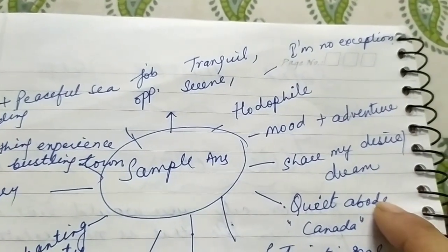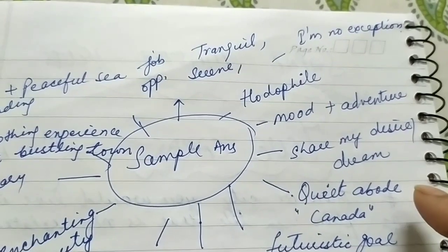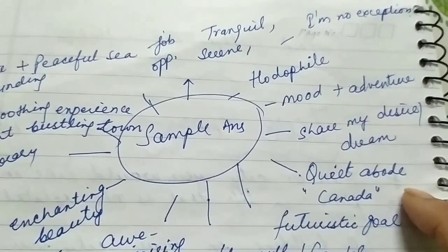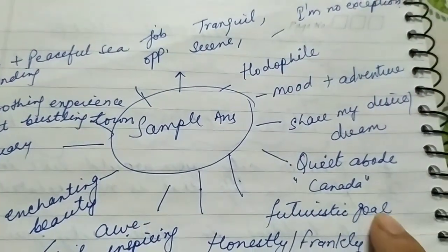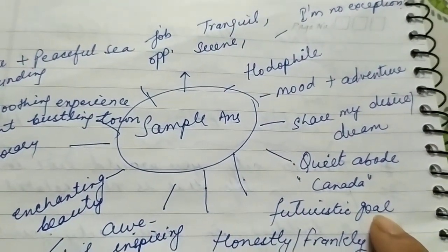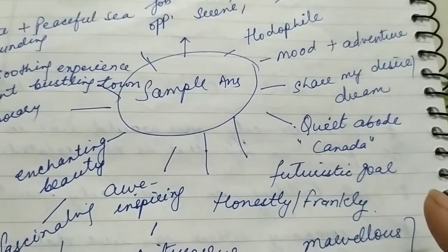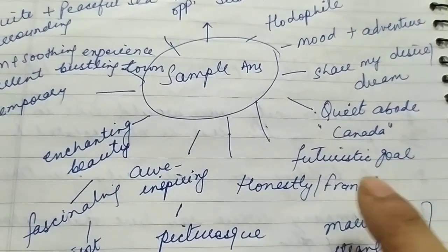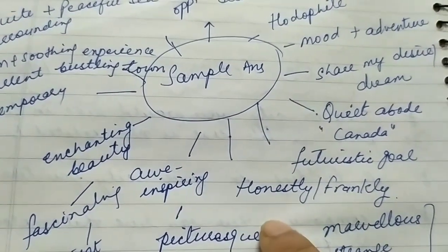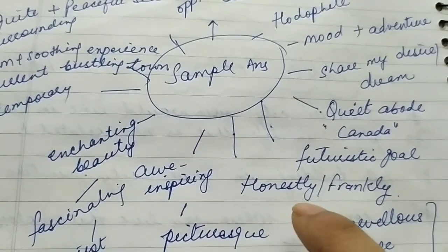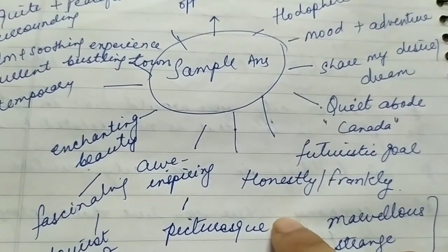Koon si place hai — woh quite a job hai, a broad place hoti hai, jahan rehne ke liye place hoti hai, usko hum bolte hain. Toh aap yeh sari chizein unke liye use kar sakte hain. Aapka futuristic goal hai — aap future mein wahaan pe jaana chahte ho, aapka aim hai. Honestly speaking, aap wahaan par gaye the — koon si place thi, suppose Canada hai, Australia hai, Switzerland hai, ya phir aapka koi hometown hai — Shimla hai, Manali hai. You can also talk about Indian places, hill station ki baare mein baat kar sakte hain.